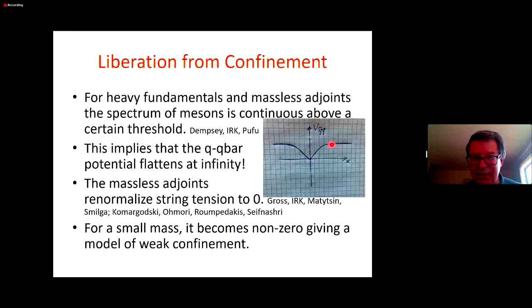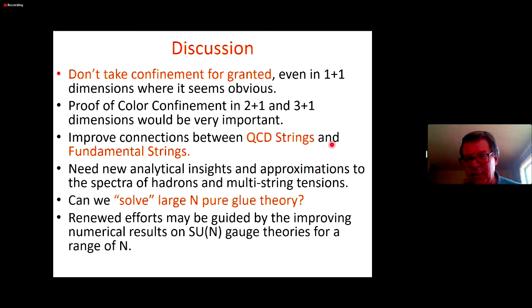Okay. So that's pretty much one of the things that we've been doing. There are various other things, but one lesson from this seemingly simple model, which is still not exactly solvable, is don't take confinement for granted. Even in one plus one dimensions, we now know that there are these screening models and the screening is still somewhat mysterious how it works in this model. But I think it's okay to say that these massless adjoints somehow managed to provide the renormalization of the string tension to zero at long distances. Of course, it would be better to understand it without light cone gauge, understand it better, say from the usual standard lattice simulations and so on. So there's still quite a lot of work to do even in this simple model. Needless to say proof of color confinement, it would be very important to have in two plus one and three plus one dimensions and improved connections between QCD strings and fundamental strings. And the perennial question of can we solve large n pure glue theory is also still looming large and for many years people have been talking about it.